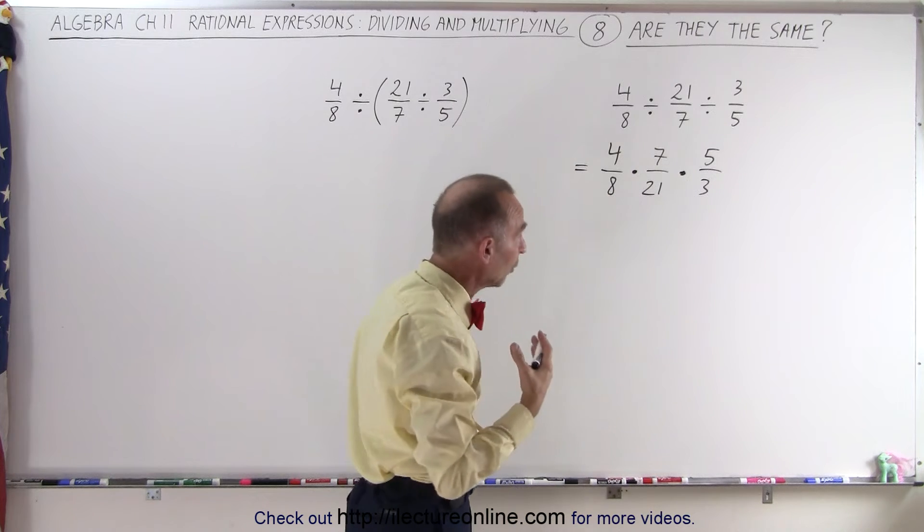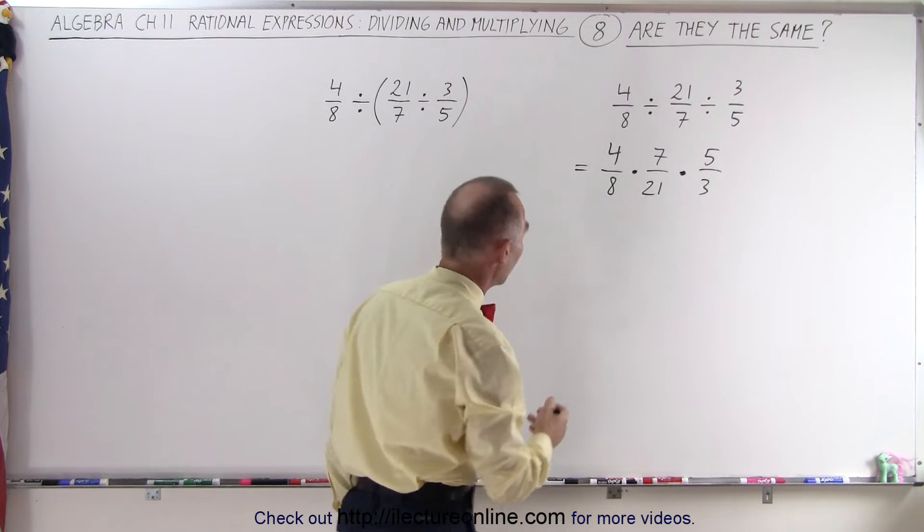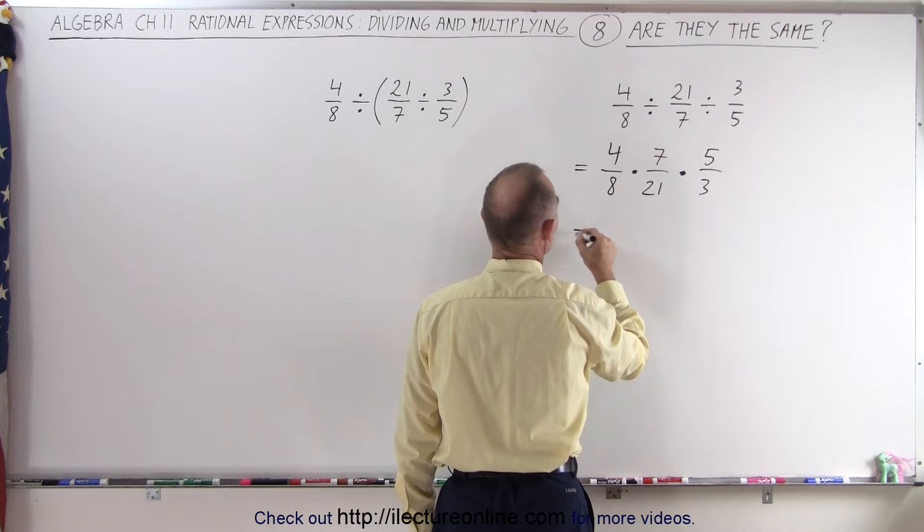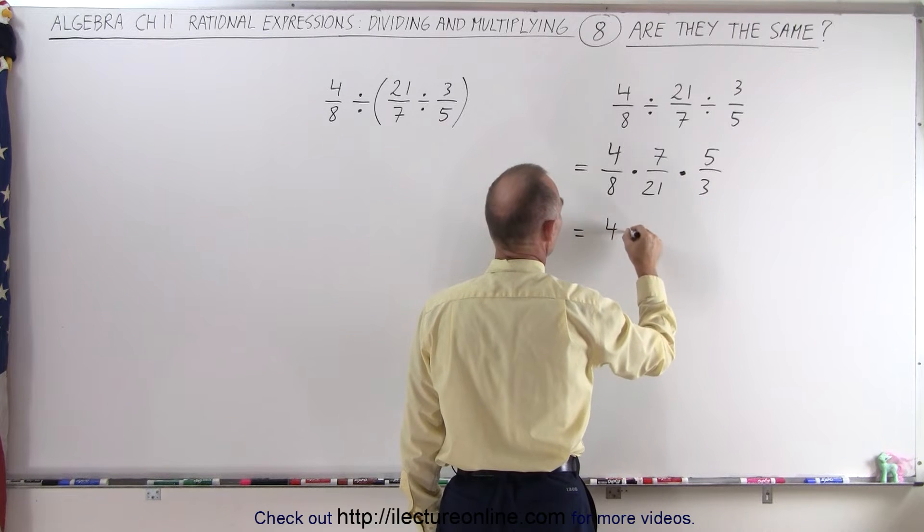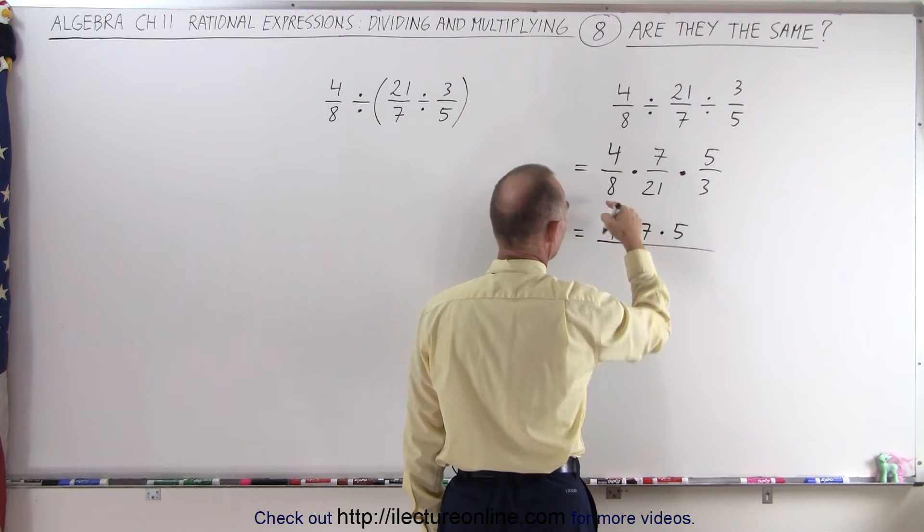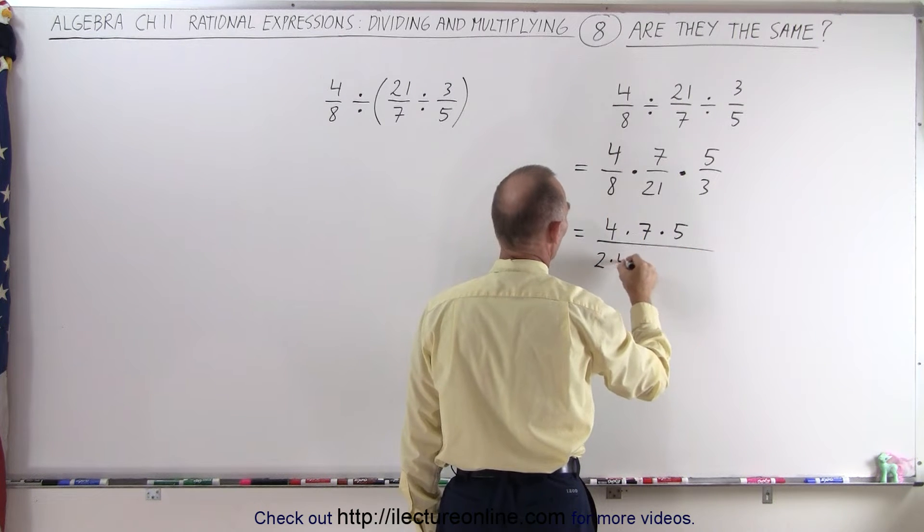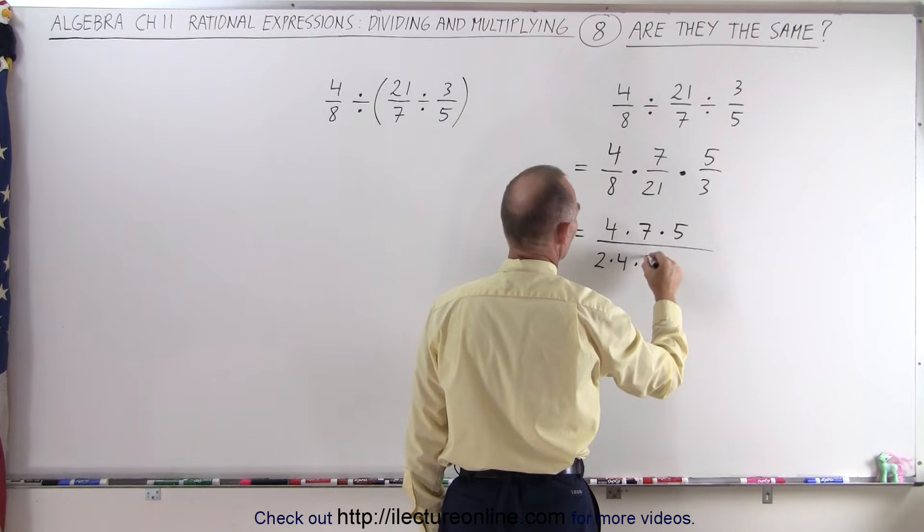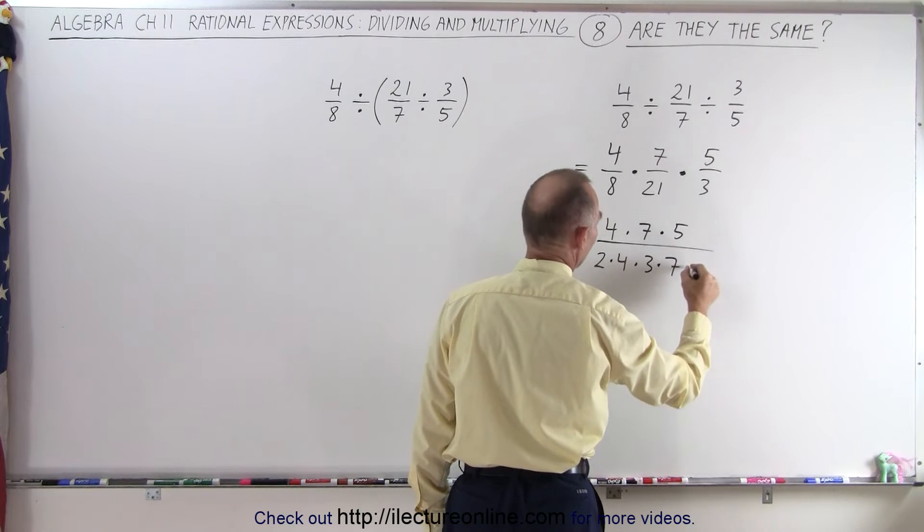Now let's work this down to the simplest form. This can be written as 4 times 7 times 5 as a numerator, divided by, well 8 can be written as 2 times 4, 21 can be written as 3 times 7, and then we have a 3 here.